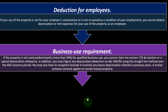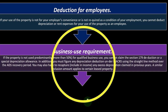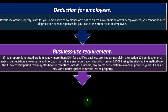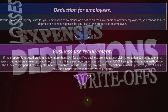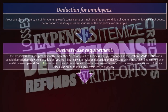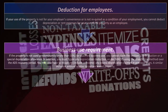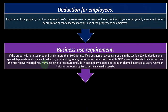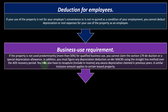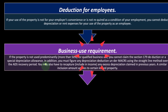If the property is not used predominantly — more than 50% — for qualified business use, you cannot claim the Section 179 deduction or a special depreciation allowance. Those are the two big added depreciations, basically often allowing you to take the full expense in the year you put the asset on the books. Because of the nature of these items, you can see why they might be skeptical of someone taking those big depreciations in year one of the property.